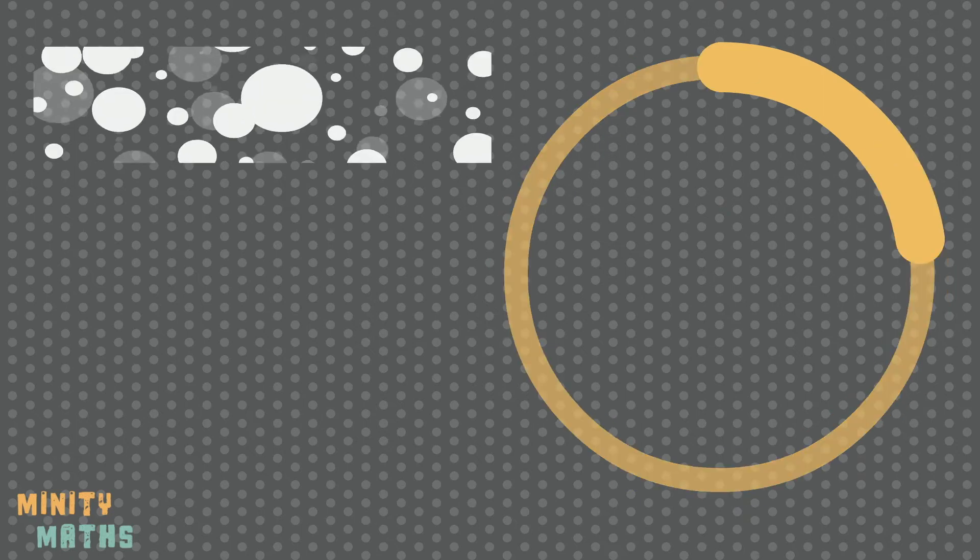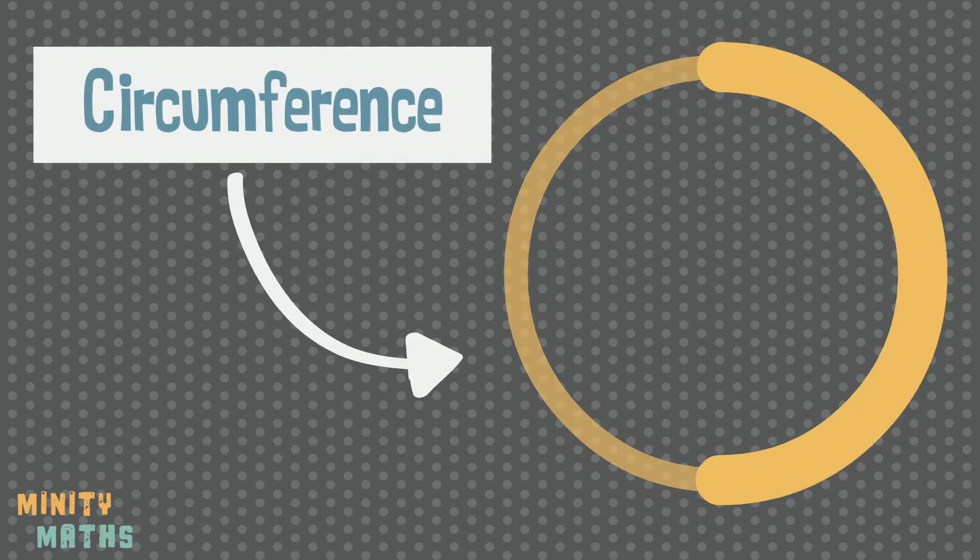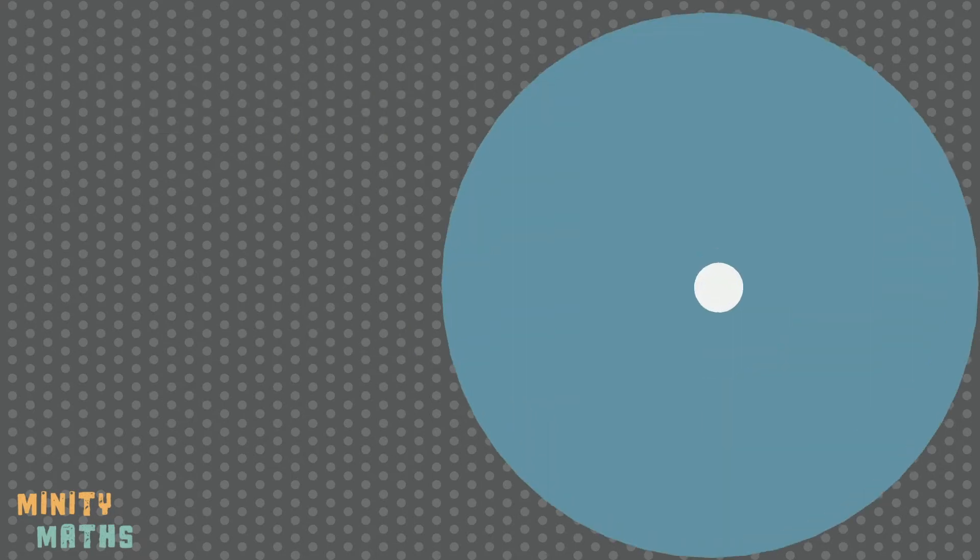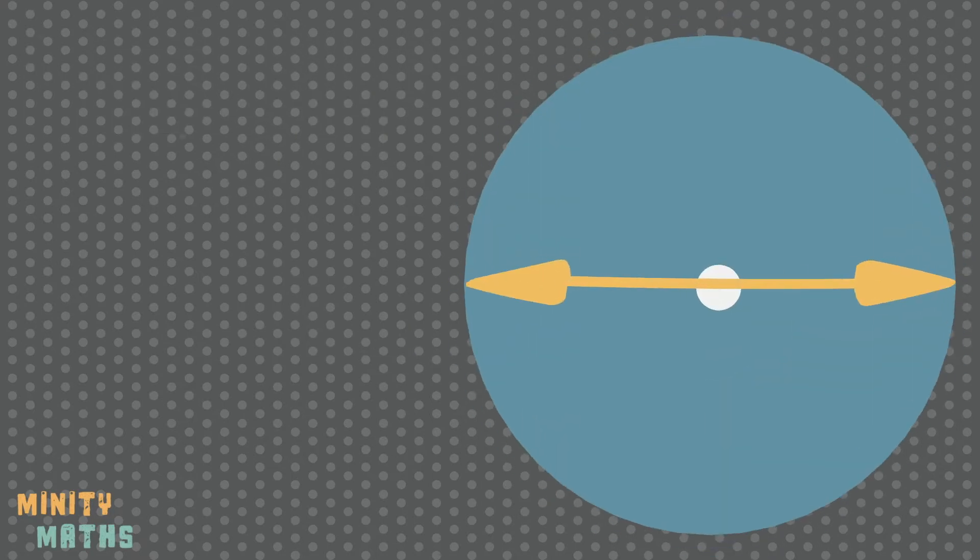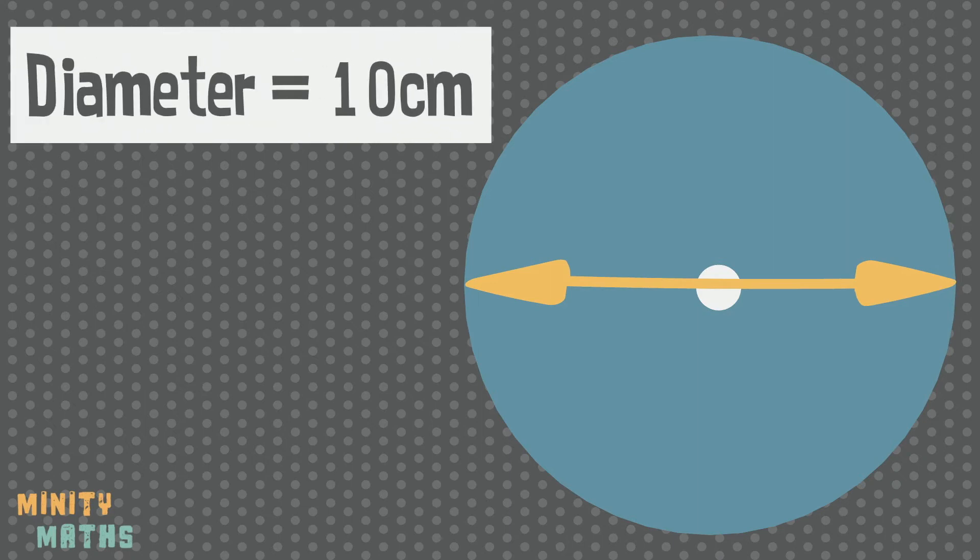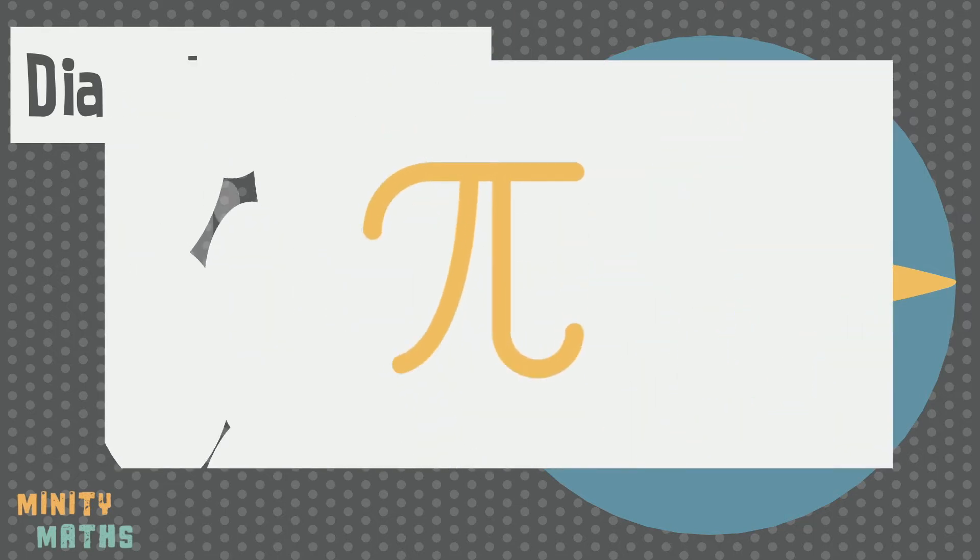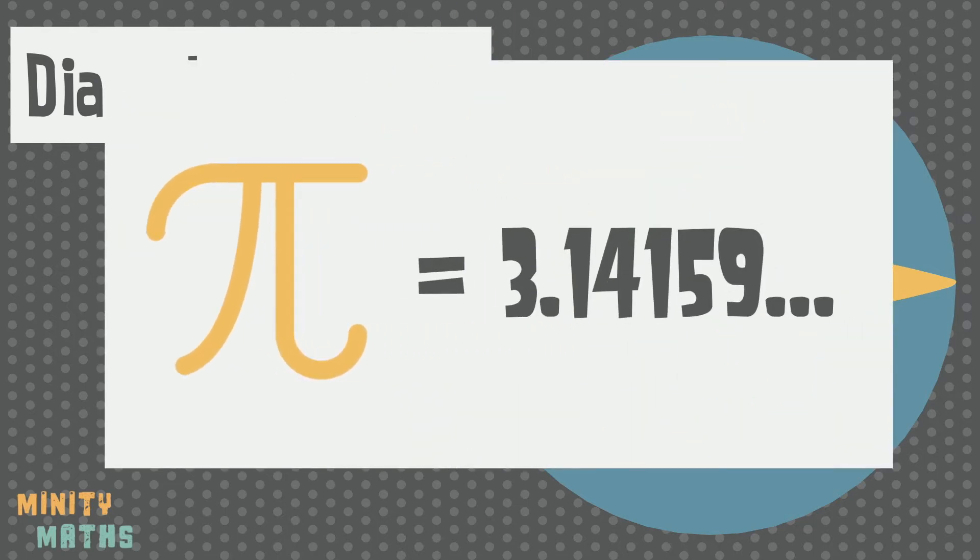The circumference is the boundary of a circle and refers to the distance around the edge of a circle. If we are given the length of the diameter or radius we can calculate the length of the circumference. To do this we also need to use the special irrational number pi which is represented by this symbol.